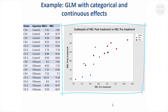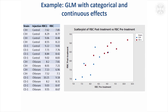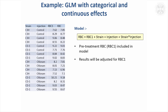We can take this into account by adjusting for the pre-treatment value in the model using a general linear model. The key thing is that strain and injection are categories, whereas red blood cell count before treatment is a measurement — not a category — but we can still put it into the model. We've now added pre-treatment red blood cell counts alongside the interaction model we had before.